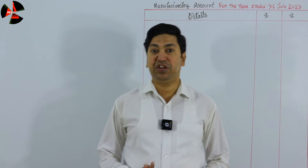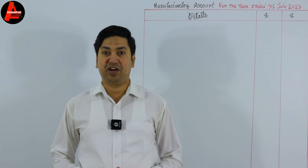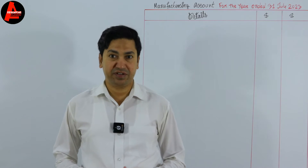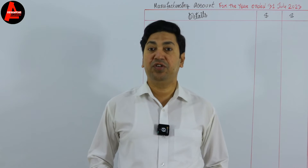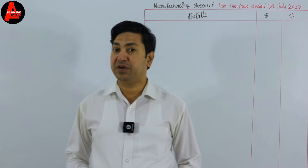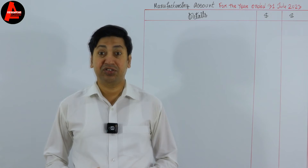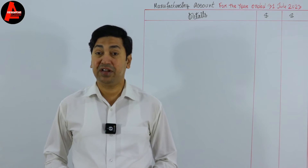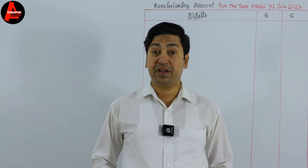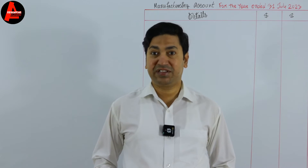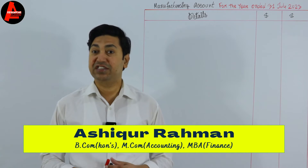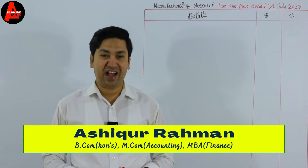Today we will learn manufacturing account. This tutorial will have three parts. In the first part, we will figure out prime cost. In the second part, we will see cost of production. And in the last part, we will prepare the income statement — specifically the first part of the income statement, which is the trading account.